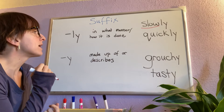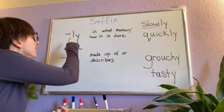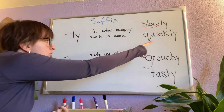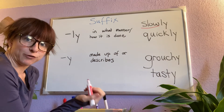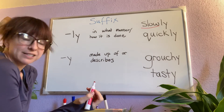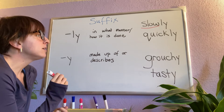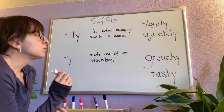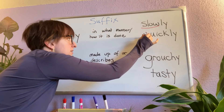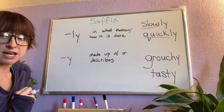The runner ran slowly. Ly can also be added to other verbs, such as quick — quickly. They quickly cleaned the house. It tells in what manner something was done.